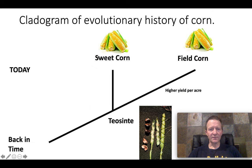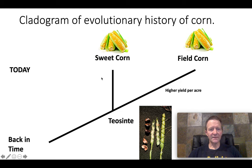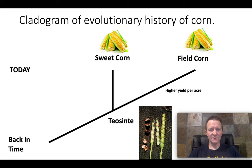This is a cladogram. If we look at this line here, that is the 'today' line, and if we start going back down, we are going back in time. Sweet corn and field corn exist today, but if we go back in time, eventually we come to a point when sweet corn and field corn did not exist — there was only the teosinte variety.